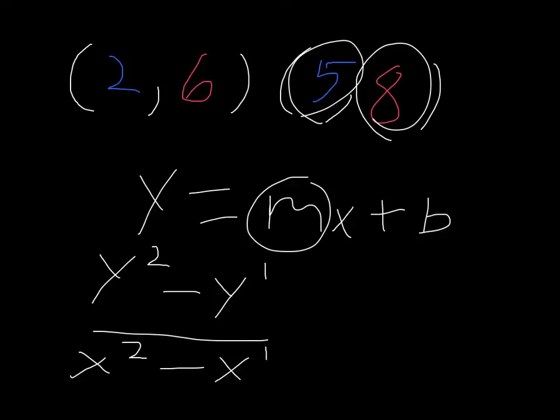So, 8 minus 6 is equal to 2, which would be our y2 minus y1, and x2 minus x1, so 5 minus 2 is equal to 3. So, our slope equals 2 thirds.